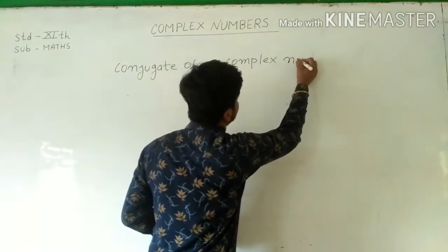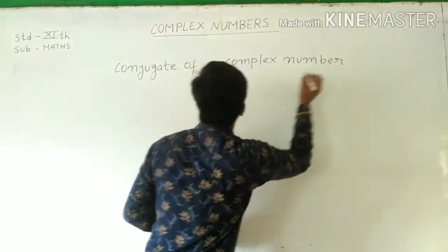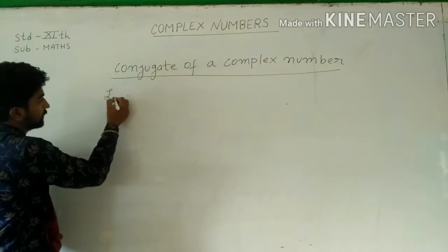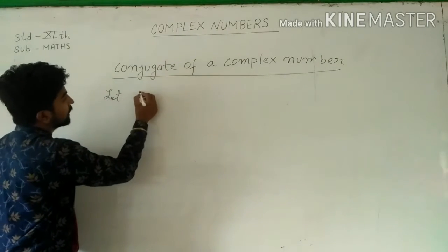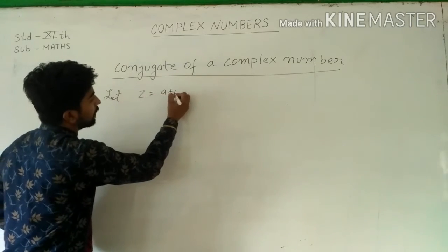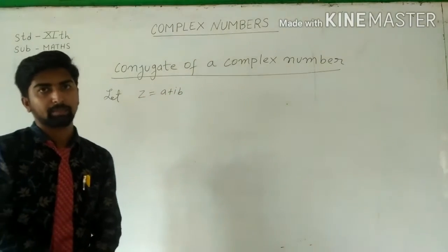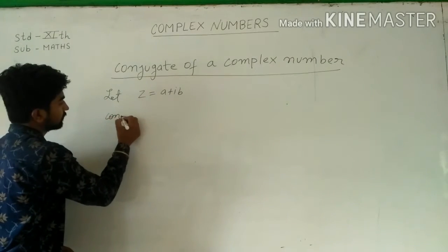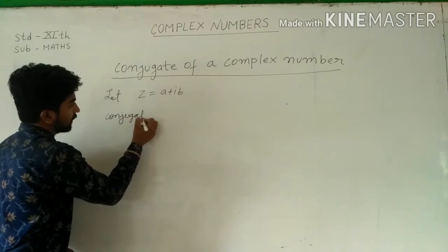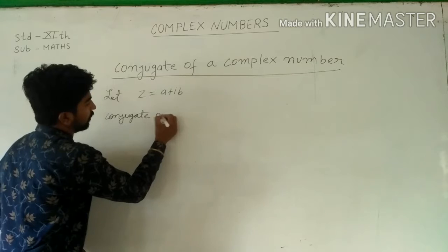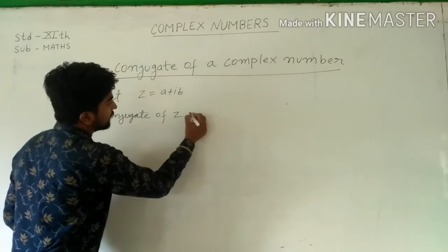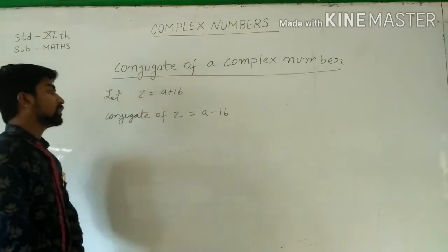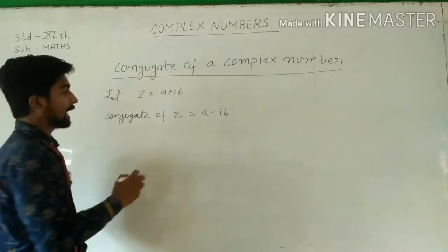A complex number. Let z equal to a plus ib, which is a complex number. The conjugate of z is defined as a minus ib. And the conjugate of z is denoted as z-bar.